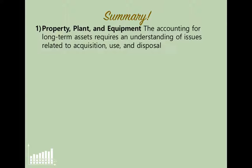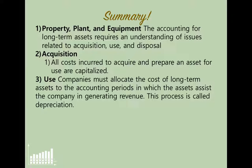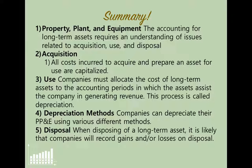In summary, the three accounting issues for property, plant, and equipment are acquisition, use, and disposal. For acquisition, all costs to acquire and prepare an asset for use are capitalized. For use, companies allocate the cost of the asset across the accounting periods in which it helps generate revenue — this process is called depreciation, and we looked at three methods. For disposal, companies will likely record gains or losses when disposing of a long-term asset.